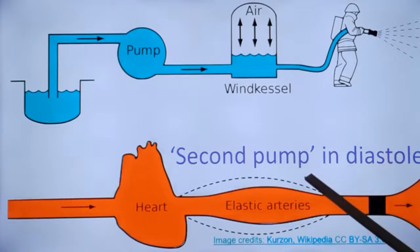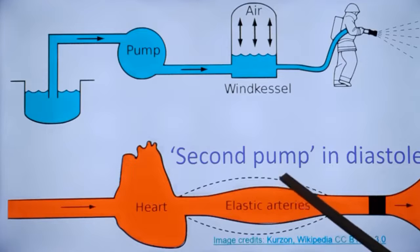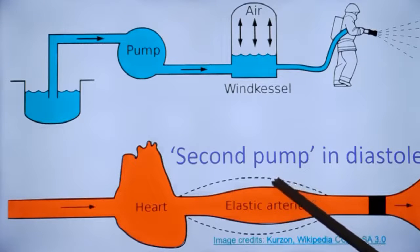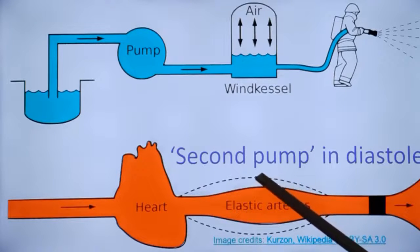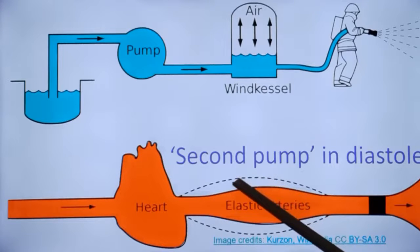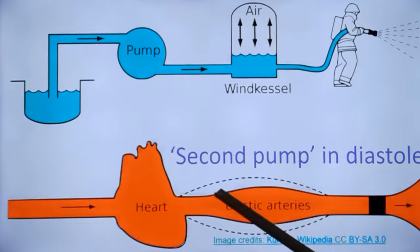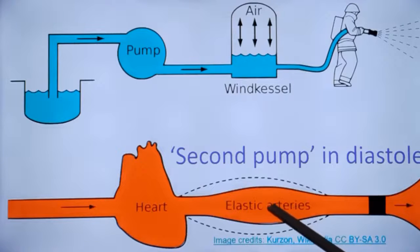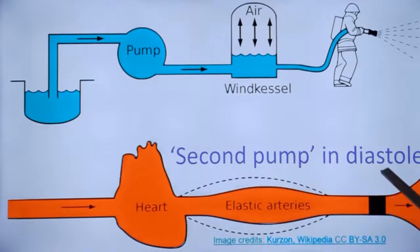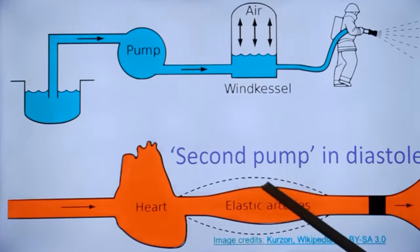This is very important for coronary perfusion, as the coronaries get perfused mainly in diastole. In systole, contraction of the myocardium compresses the intramyocardial vessels, so that the subendocardial region gets more blood supply in diastole. So maintaining a good pressure in diastole is important for the coronaries, and the second pump in diastole by the elastic aorta gives a boost to coronary circulation.